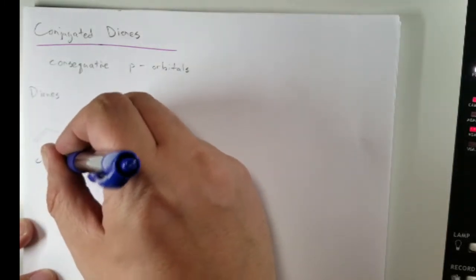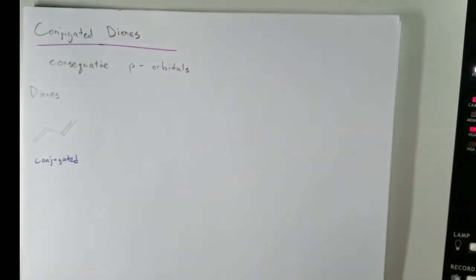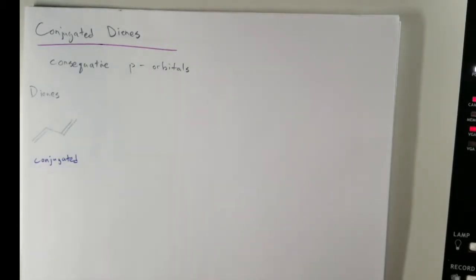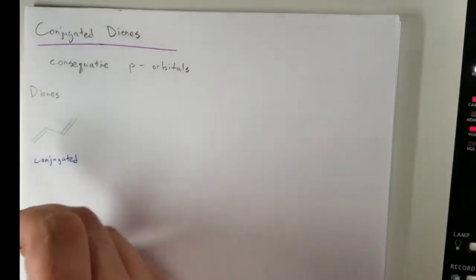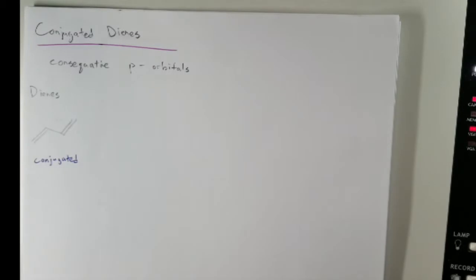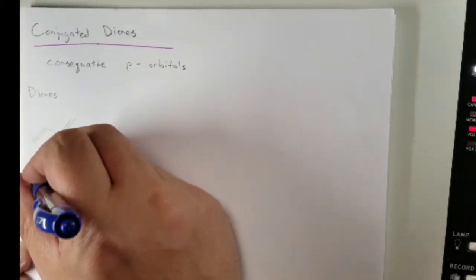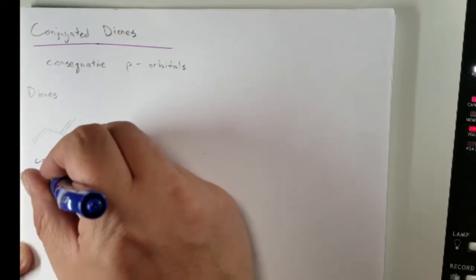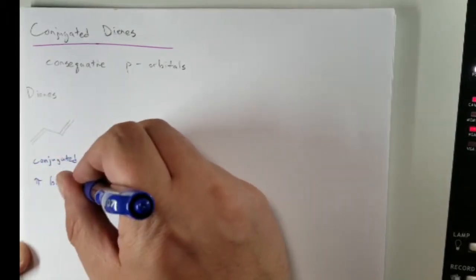Whenever you have a situation like this where the system is conjugated, it works out where the pi bonds — basically these two bonds here, the actual pi bonds, the ones that are going out of the plane — they happen to be parallel to each other. So we say the pi bonds are parallel.